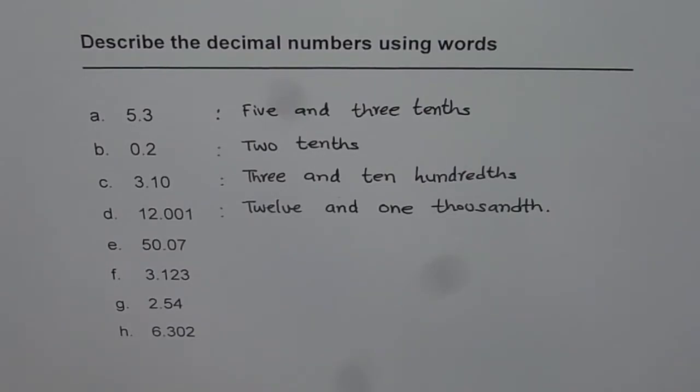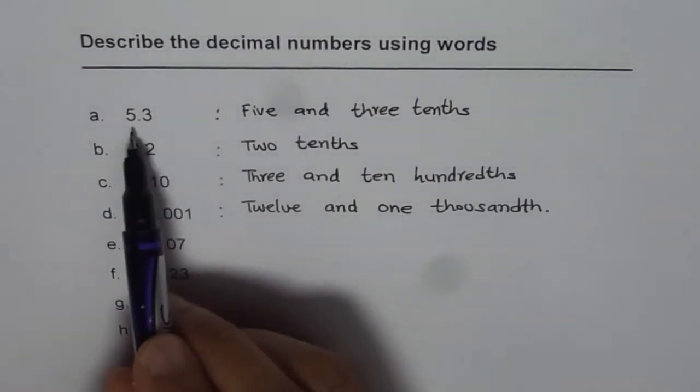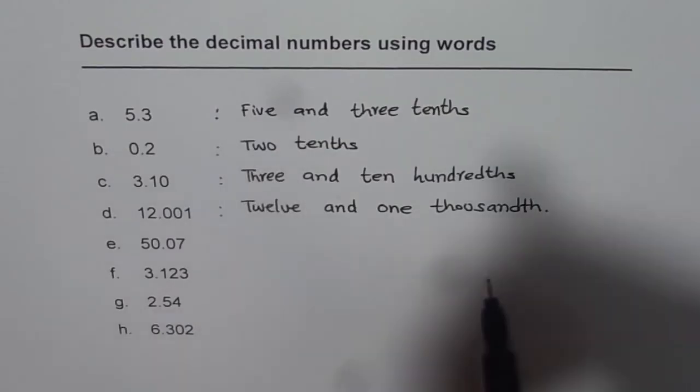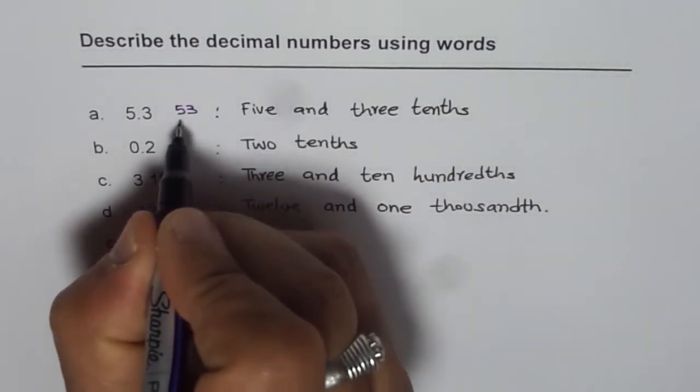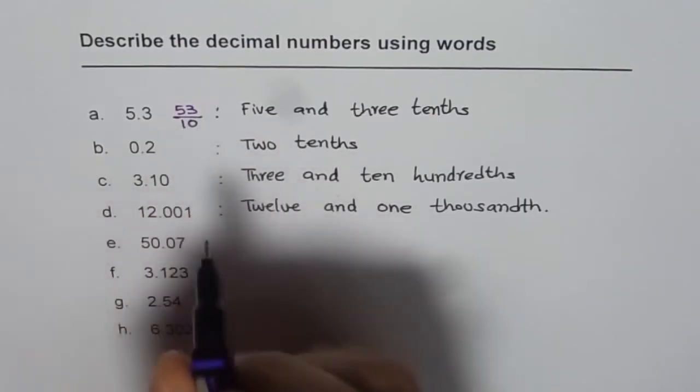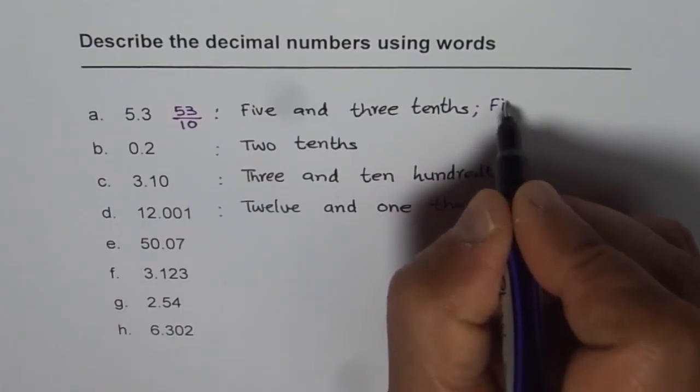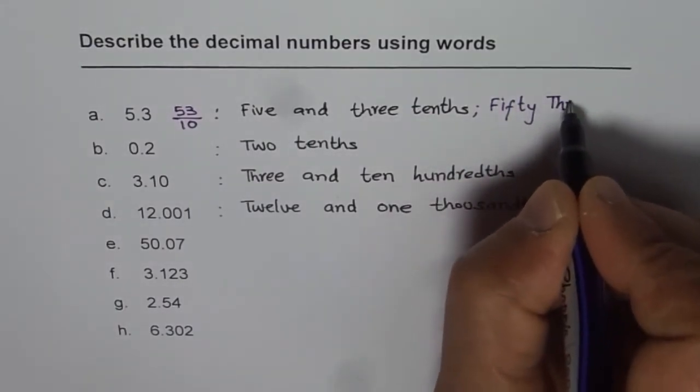Now let me show you another way of writing the same numbers. Instead of using AND, we can write the whole number as tenths. 5.3 - you can write 5.3 as 53 over 10, right? That gives you an idea. And I can also write this number as 53 tenths.